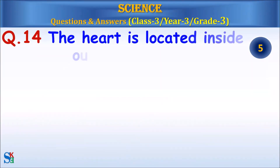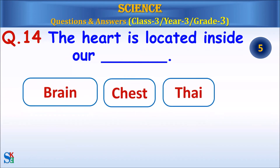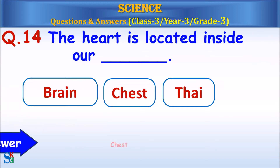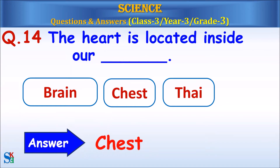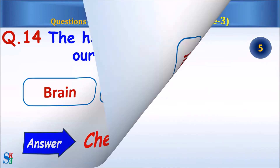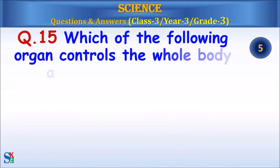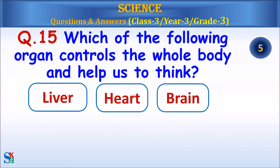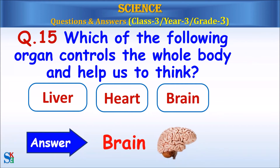Question 14: The heart is located inside our brain, chest, or thigh? Answer: Chest. Question 15: Which of the following organ controls the whole body and helps us to think — liver, heart, or brain? Answer: Brain.